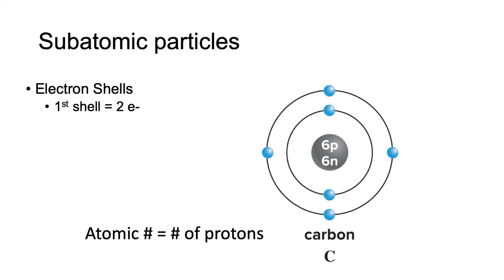The second shell can hold up to 8 electrons. We only had 6 electrons total in carbon, and we put 2 into the first shell. This leaves 4 more to go into the second shell.